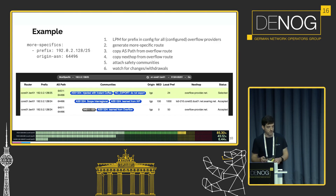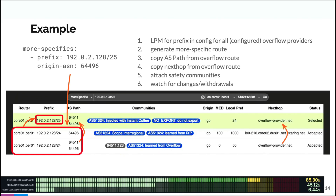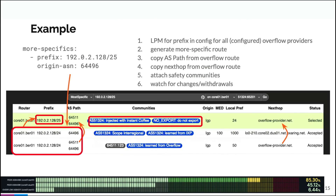Let's have a look at one example. The config is on the upper left, and this is the prefix we want to inject. We do an LPM lookup in our routing table and find the overflow and the direct path. We generate the slash-25 more specific on our own, copy the AS path from the overflow route, copy the next hop, attach our safety communities, and we will watch this specific path for any changes that are necessary.